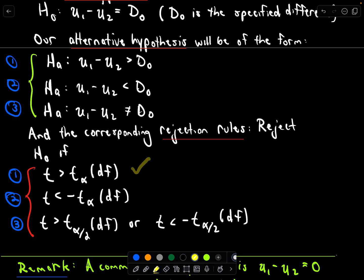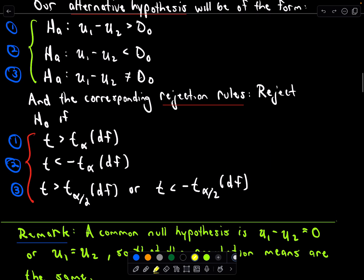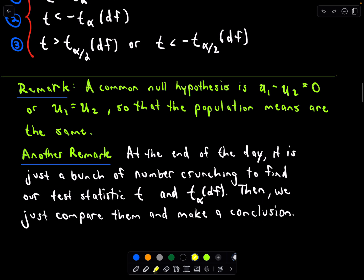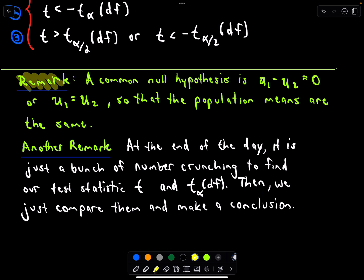And again we have these corresponding rejection regions, the same thing as before depending on the type of hypothesis you have, whether it's one-tailed or two-tailed. Again everything at this point if you're familiar with hypothesis testing should feel largely the same. It's just you're computing degrees of freedom a little different and the test statistic a little different. So two very important remarks here. A common null hypothesis is that the difference in the sample means equals zero. Well if the difference in the sample means equals zero that would mean that those sample means are in fact equal. So that's another way of stating that.